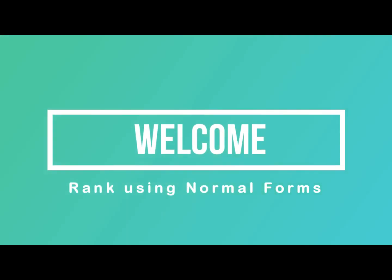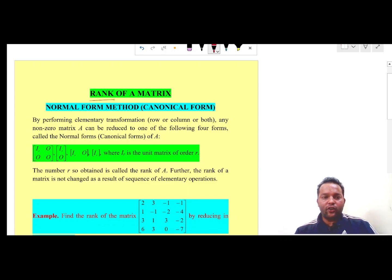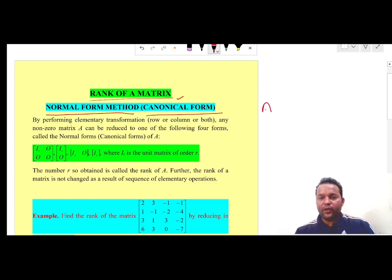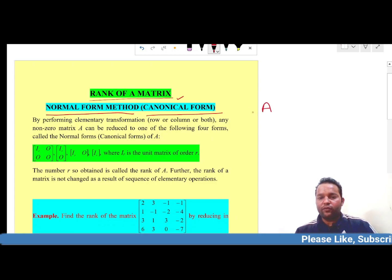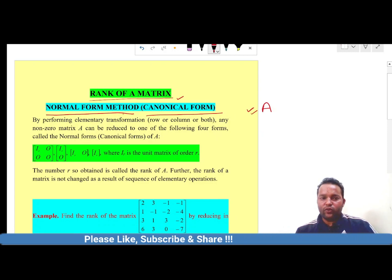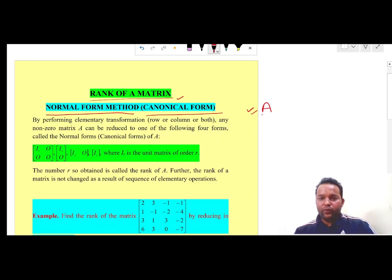Welcome everyone. Today we will discuss another method to find the rank of a given matrix. We will discuss the normal form method, also known as the canonical form method. In this case, our objective is to find the rank of a given matrix A using the normal form or canonical form approach.